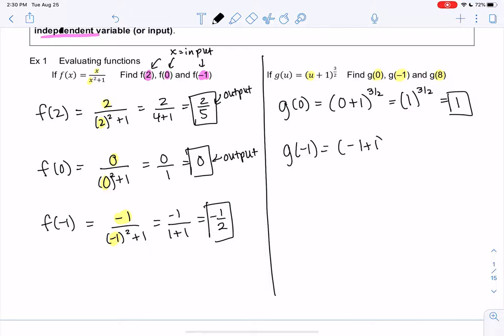So let's try negative 1. So we get 0 to the 3 halves, and 0 to any power is 0.